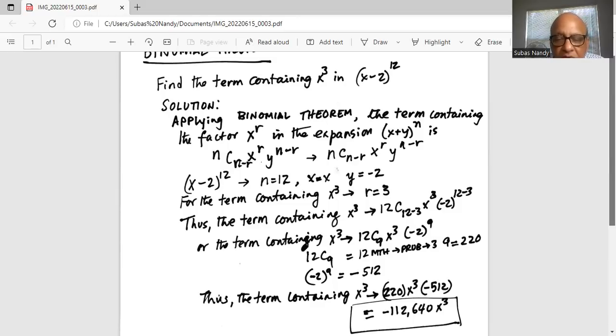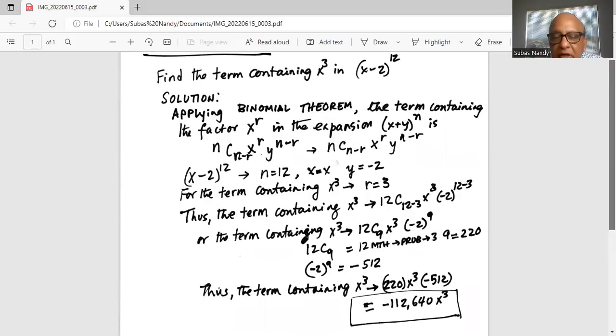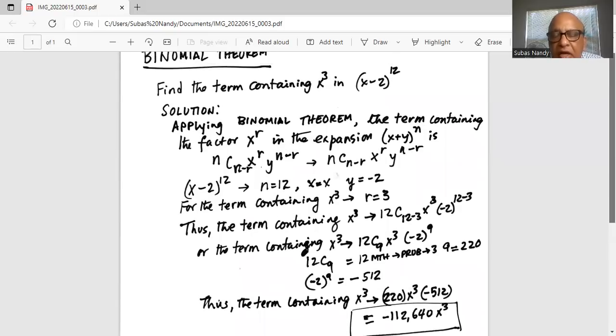There is a minus sign in front of it, multiplied by x^3. That is the term containing x^3 in the expression (x-2)^12.